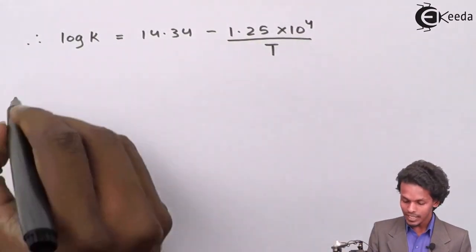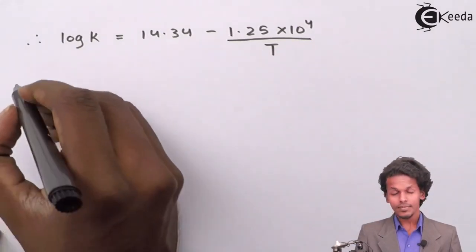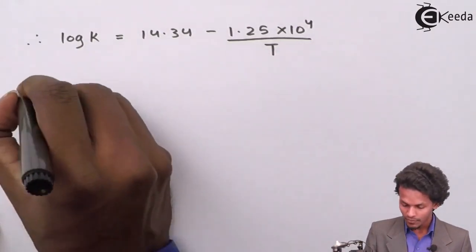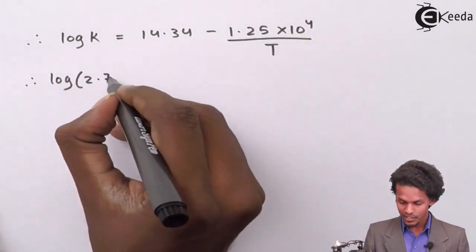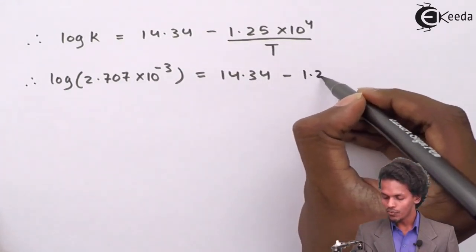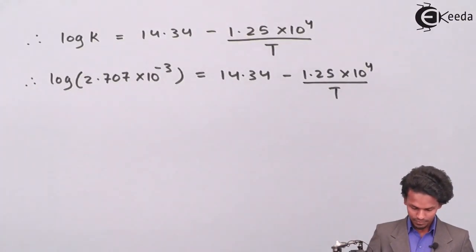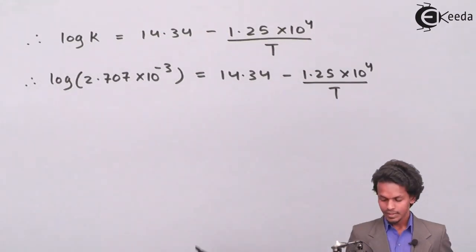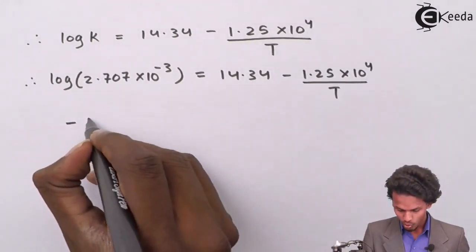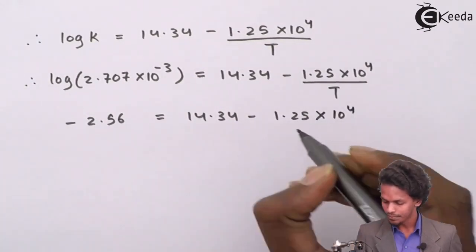T is what we have to calculate, and we now have the value of K. Substituting: log(2.707 × 10⁻³) = 14.34 minus 1.25 × 10⁴ / T. The left-hand side evaluates to minus 2.56, giving us: −2.56 = 14.34 − 1.25 × 10⁴ / T.